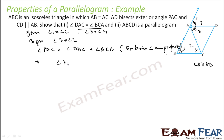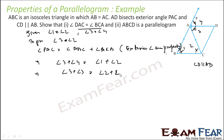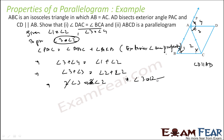Angle PAC = angle 3 + angle 4. And angle ABC = angle 1, angle ACB = angle 2. Since angle 3 = angle 4 (AD bisects angle PAC), we can write angle 3 + angle 3 on the left. Since angle 1 = angle 2 (AB = AC), we write angle 2 + angle 2 on the right. So 2 × angle 3 = 2 × angle 2, which gives us angle 3 = angle 2. That is what we had to prove.